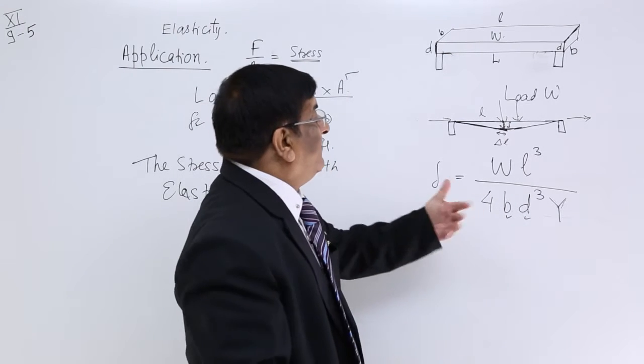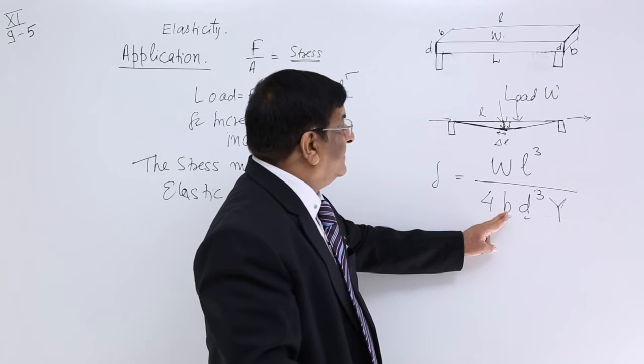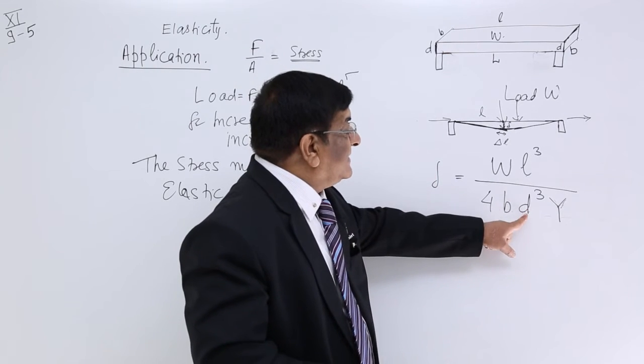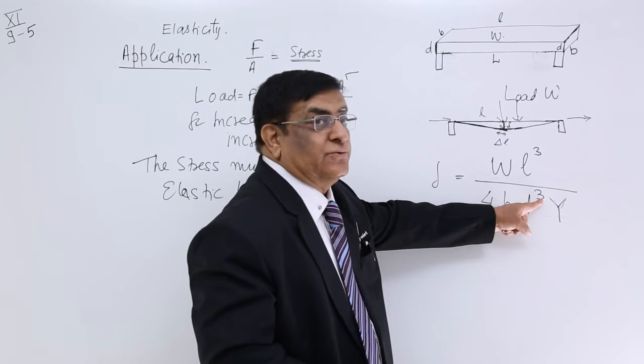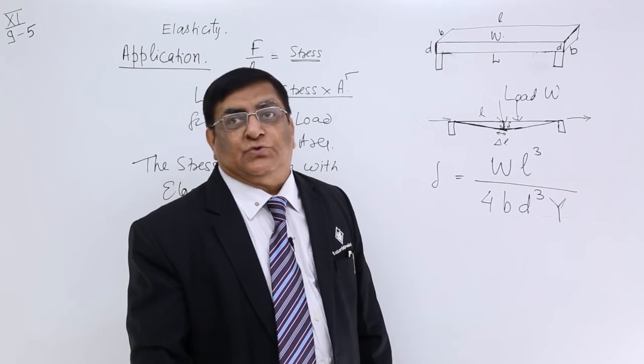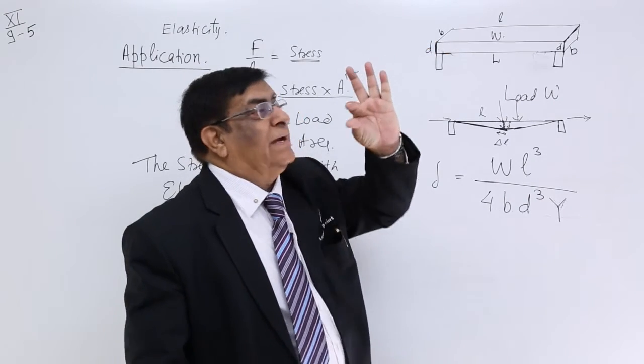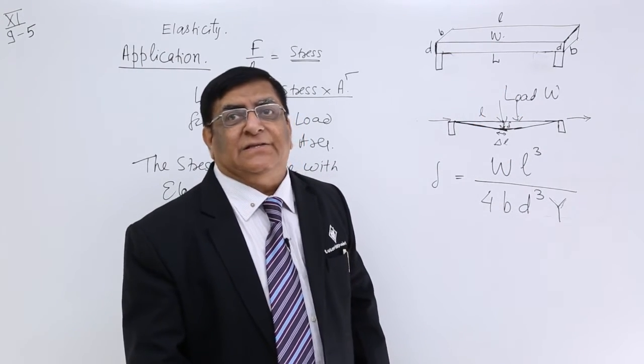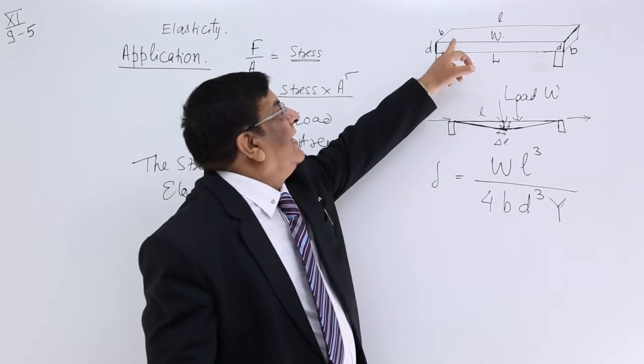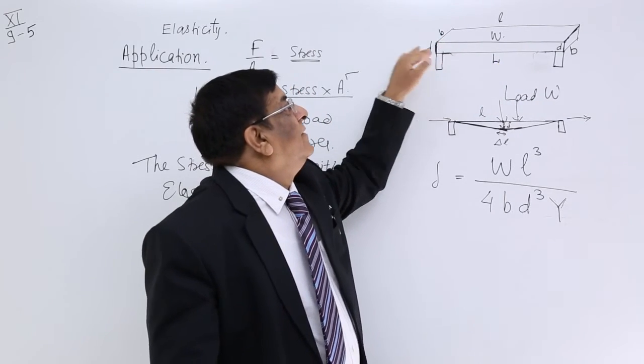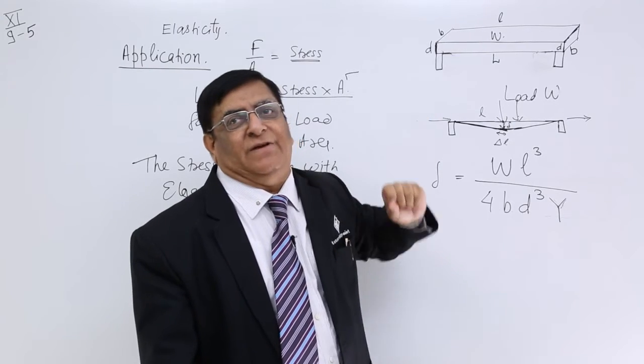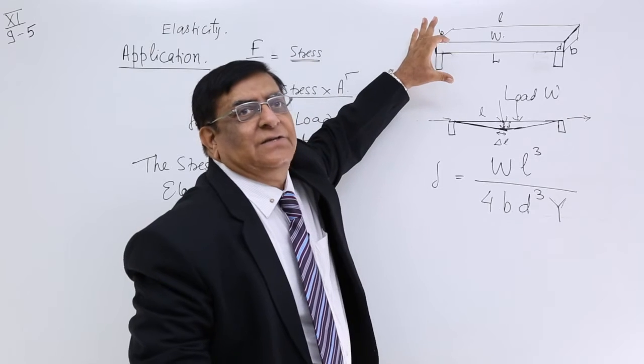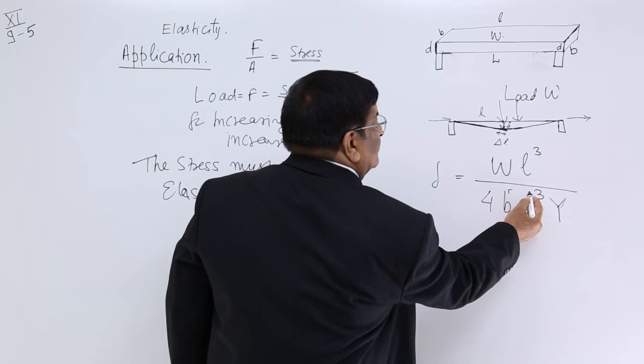Now, this breadth and depth, which is more effective? If I double the breadth two times, the delta will decrease two times. I want to decrease it. If I increase this D two times, two into two into two, delta will decrease eight times. So that means this D is very effective. If I make it only two times, this delta will decrease eight times. It will never cross Y limit. That means, if I have a certain weight of steel, 100 kg of steel, and I have an option to make it a beam, what should I keep more? Which dimension? The answer is I should keep this depth, this D as large as possible. D should be as large as possible, compared to B.